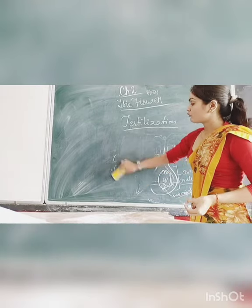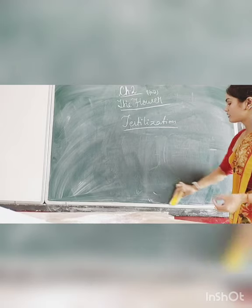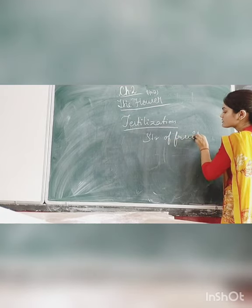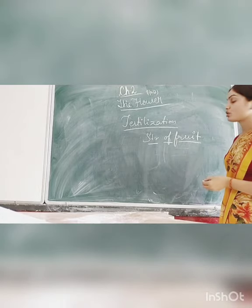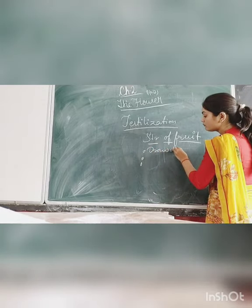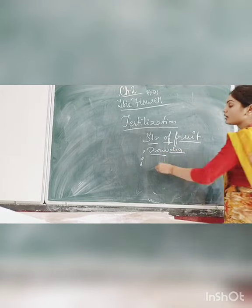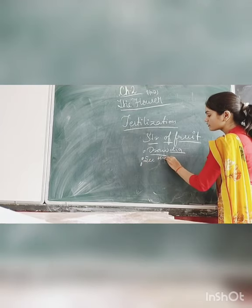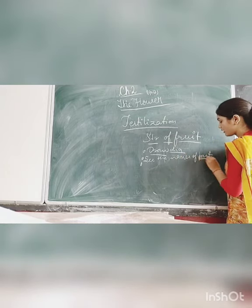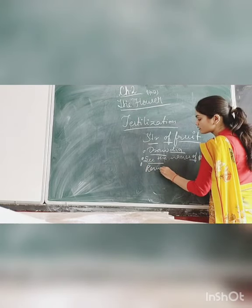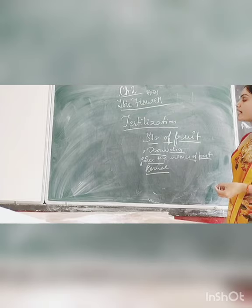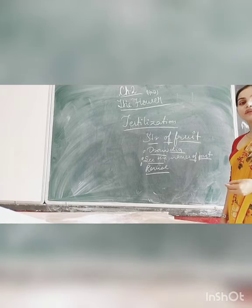From your book, you will now study the structure of fruit, which we will discuss in our next lecture. Before that, you have to draw a diagram of the fruit, see the names of its parts, and revise whatever was taught today and earlier. In our next class we will also finish this chapter.